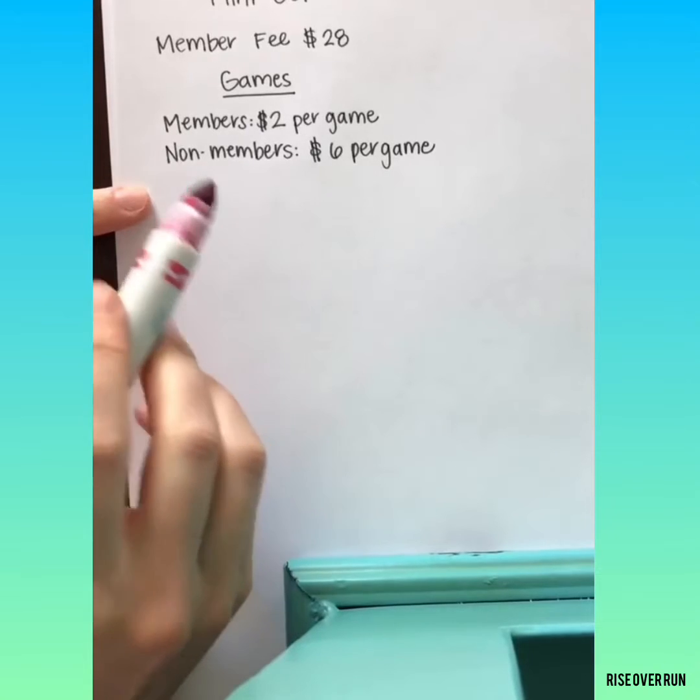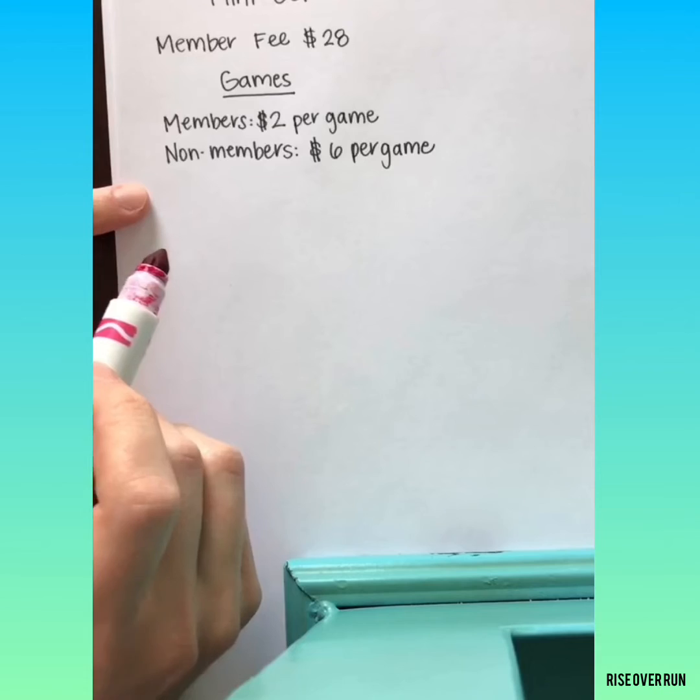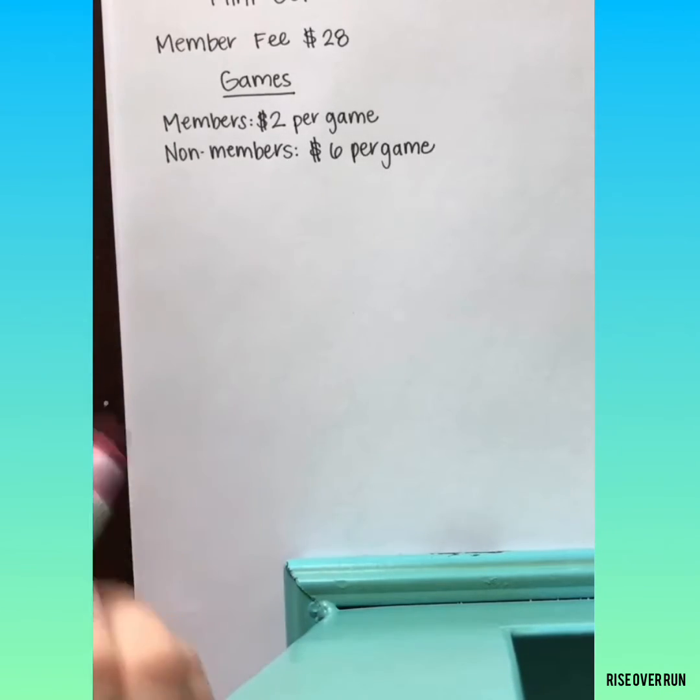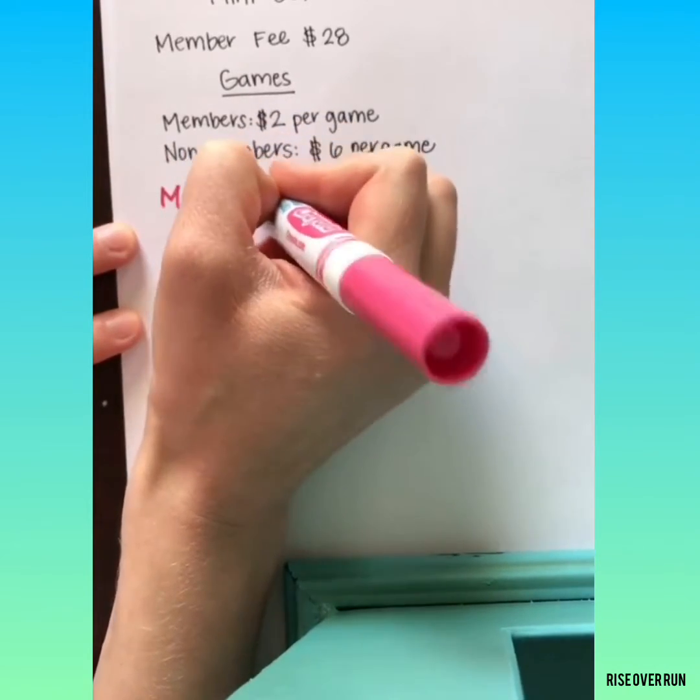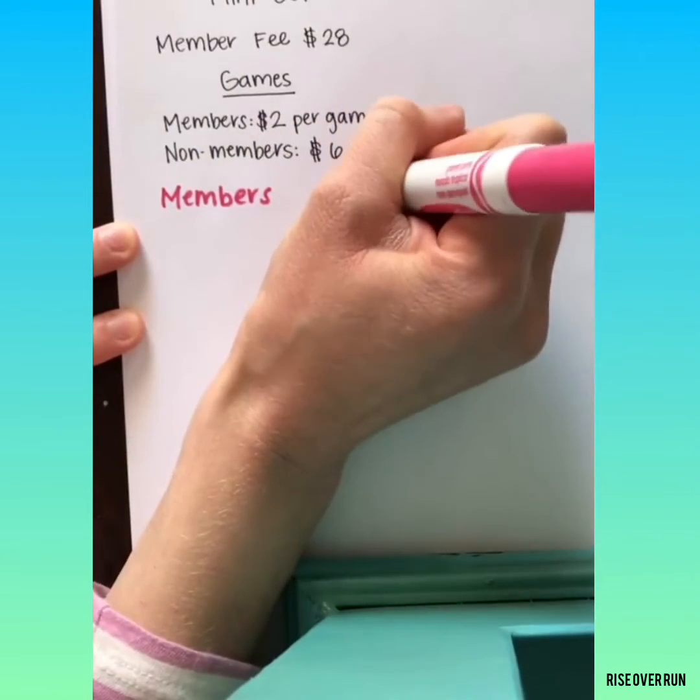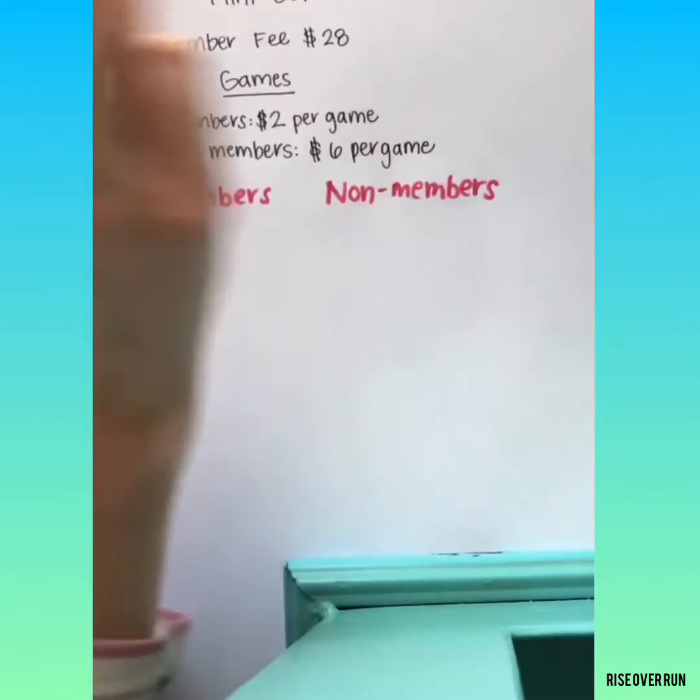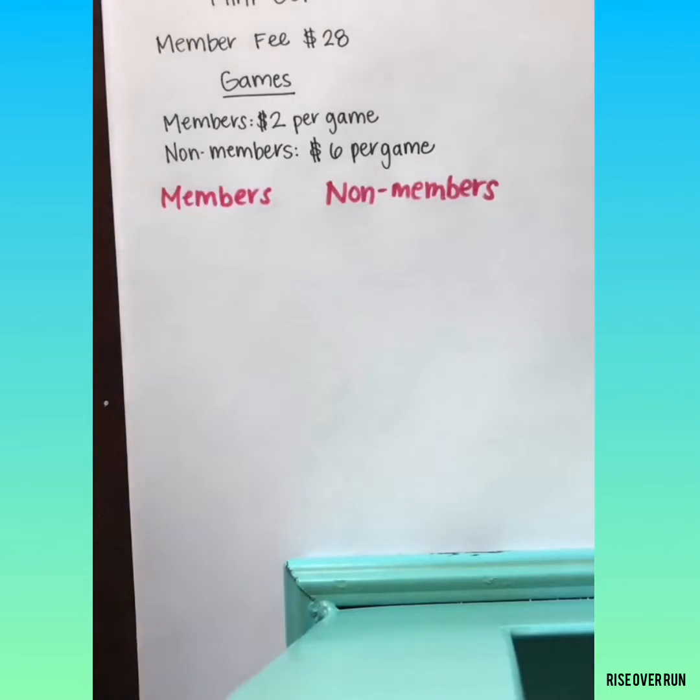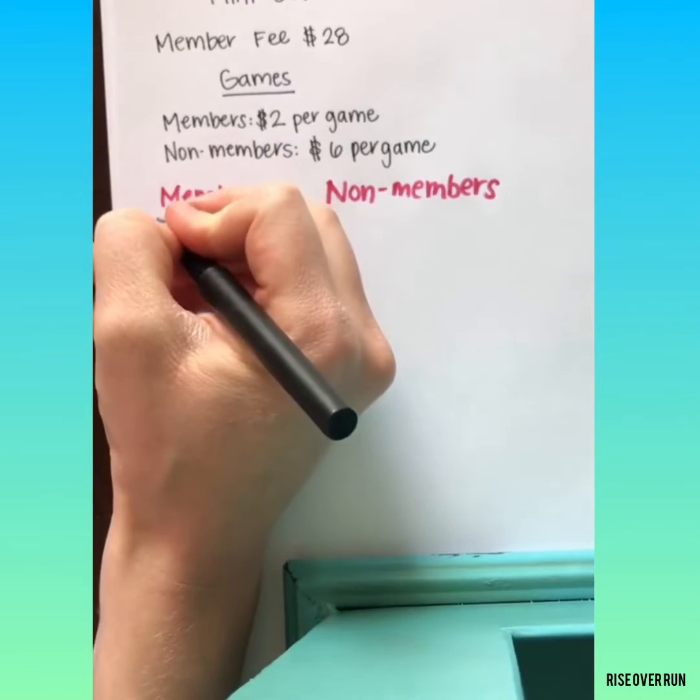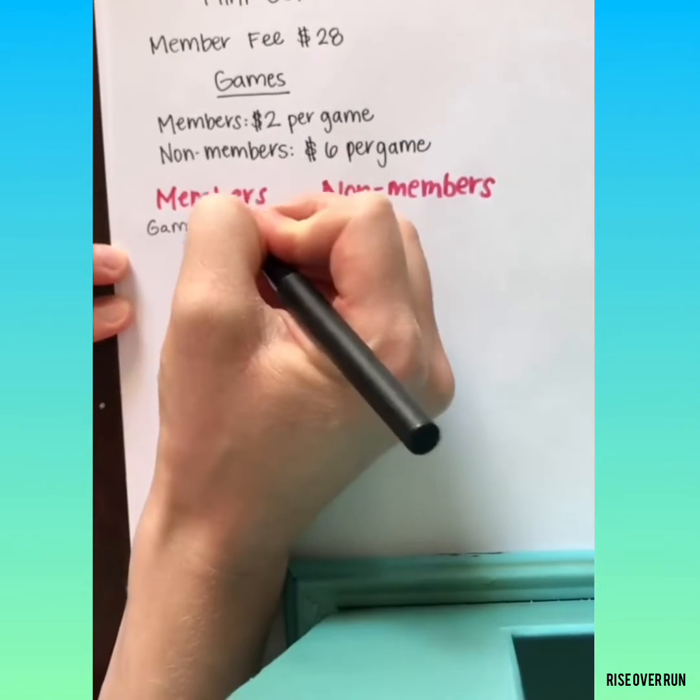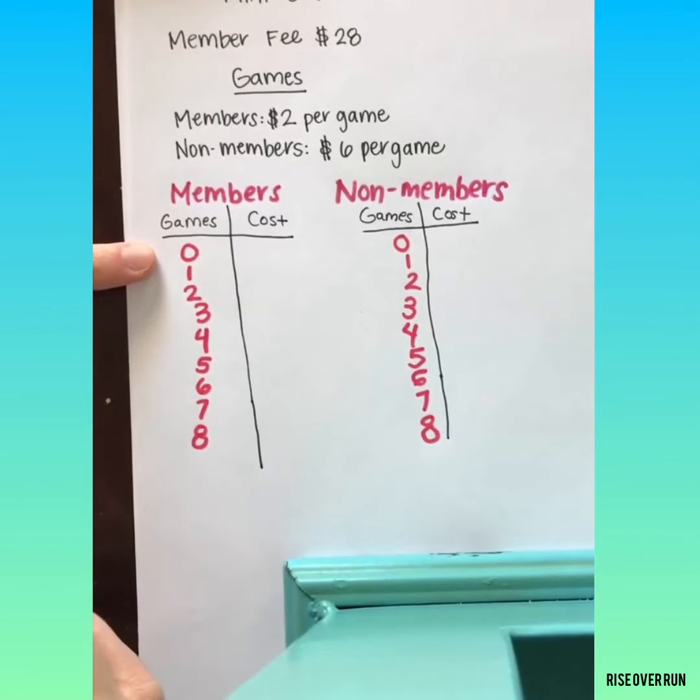Now we could graph both situations just like we did before and see where the lines intersect. Or some students like to make a table of values to help organize their thoughts. So let's do a table for members and non-members. And we'll think about what each will pay depending on how many games they play. So we'll do games and cost.